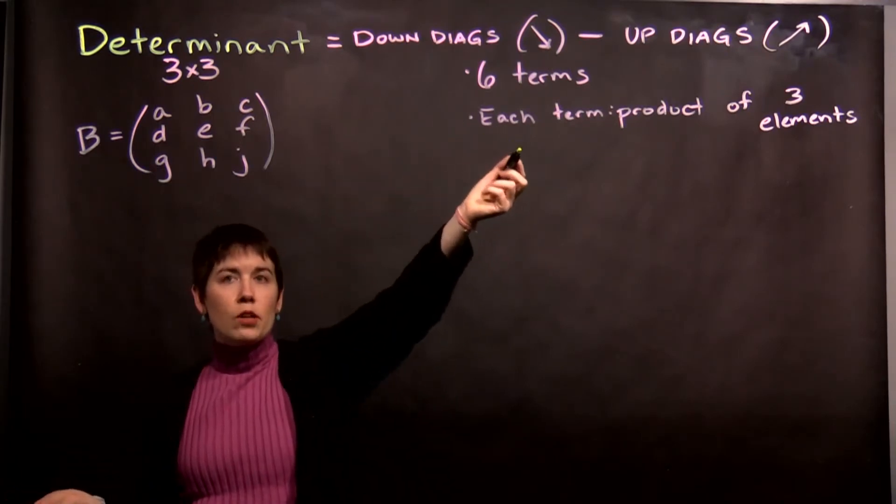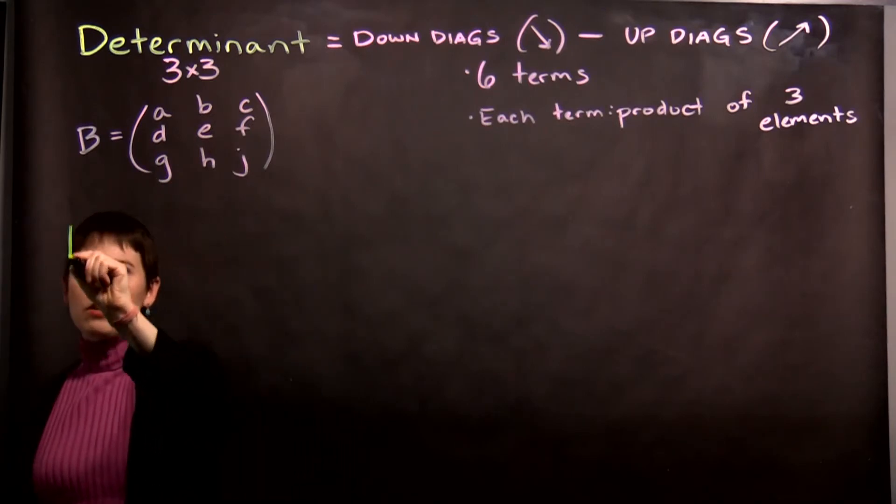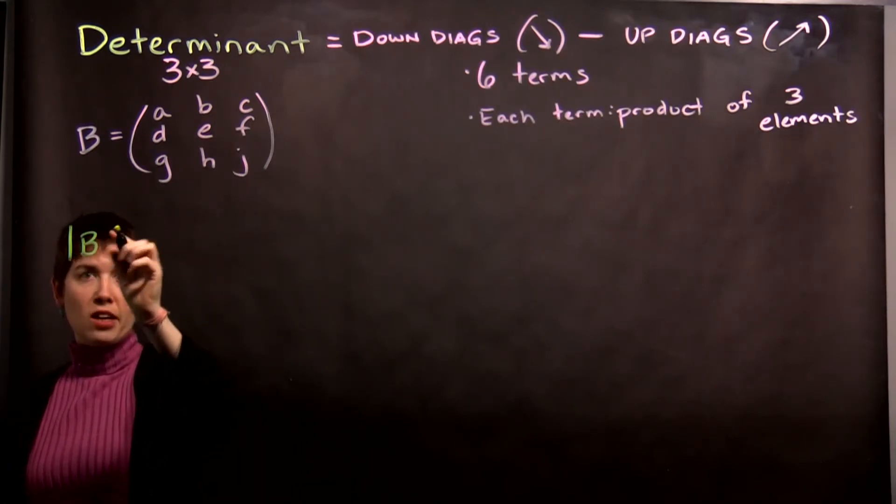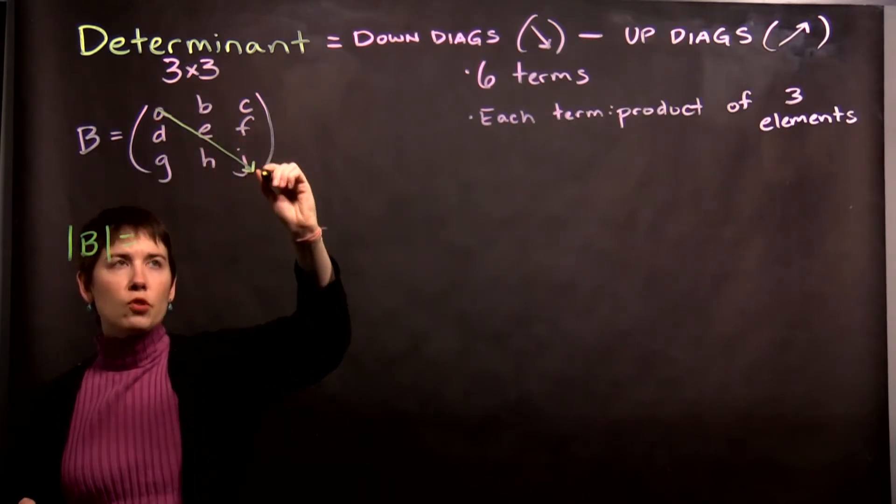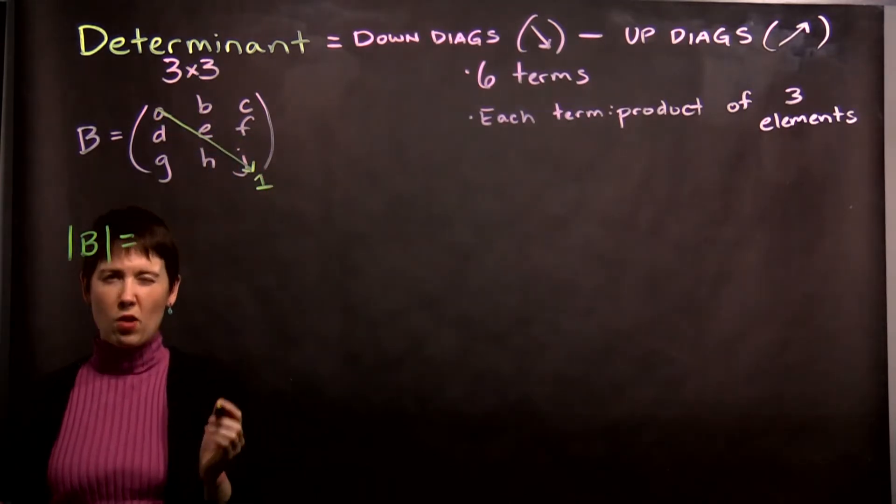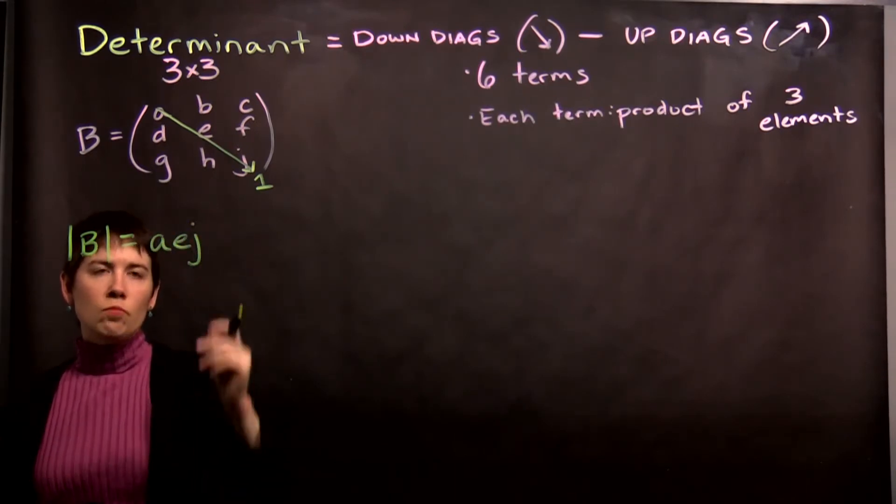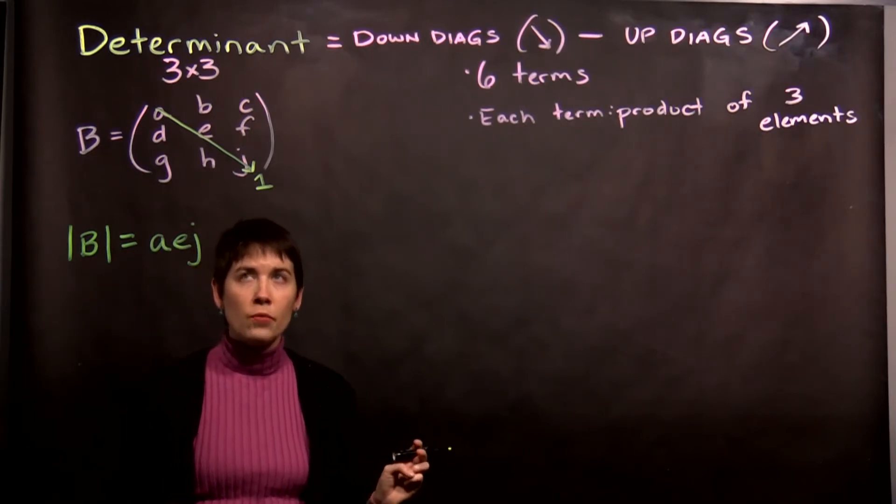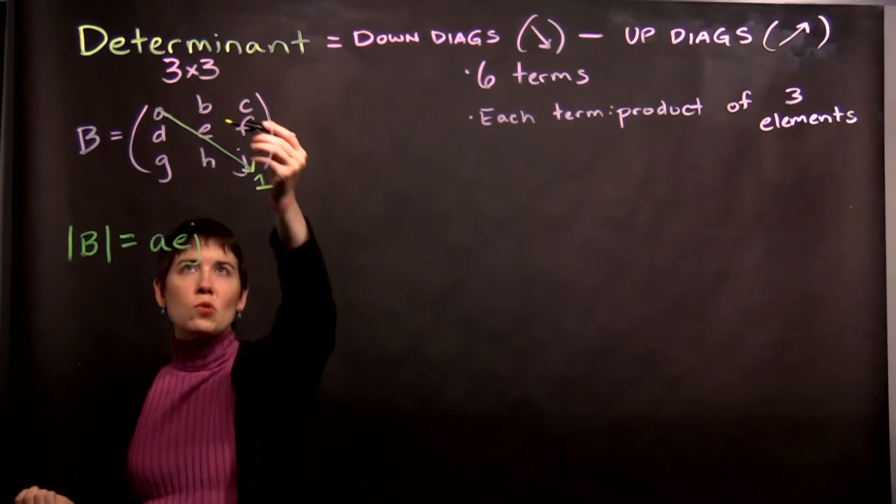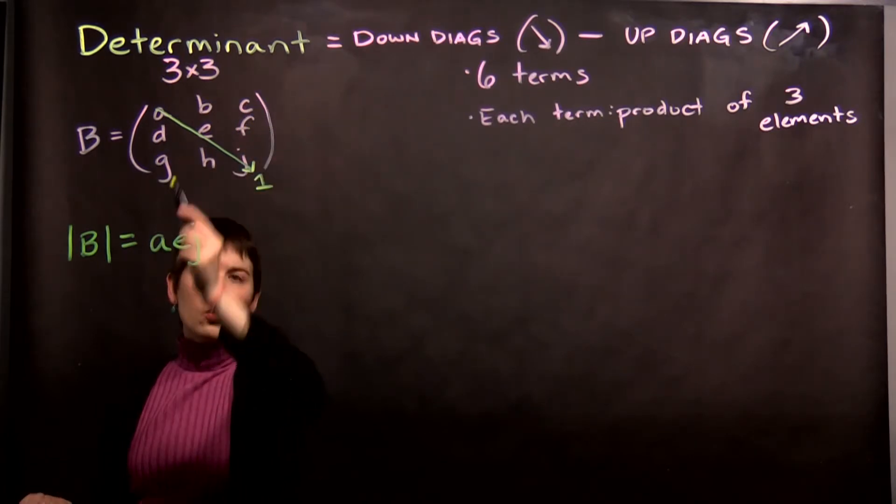My first thing I want to do is do some down-diagonals. When I want to calculate the determinant, I'll write it this way of B. My first diagonal, and I'm just going to put a number here so we can keep track of what we're doing, is A times E times J. These are three multiplied scalars that might be complex. My next diagonal would start with B, and then be multiplied by F, and then you have to wrap around.